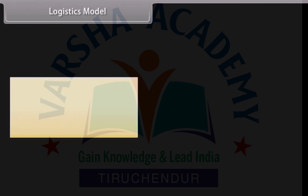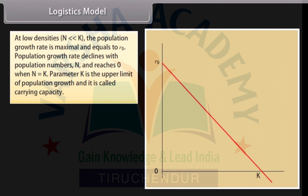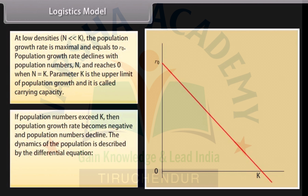The logistic model suggests that the rate of population increase may be limited and may depend on population density. The growth rate r = r0 × (1 − N/K). At low densities, where N is much less than K, the population growth rate is maximum and equals r0. Population growth rate declines with population numbers N and reaches 0 when N equals K. Parameter K is the upper limit of population growth called the carrying capacity. If population numbers exceed K, then population growth rate becomes negative and population numbers decline. The dynamics of the population is described by the differential equation: dN/dt = r0 × N × (1 − N/K).